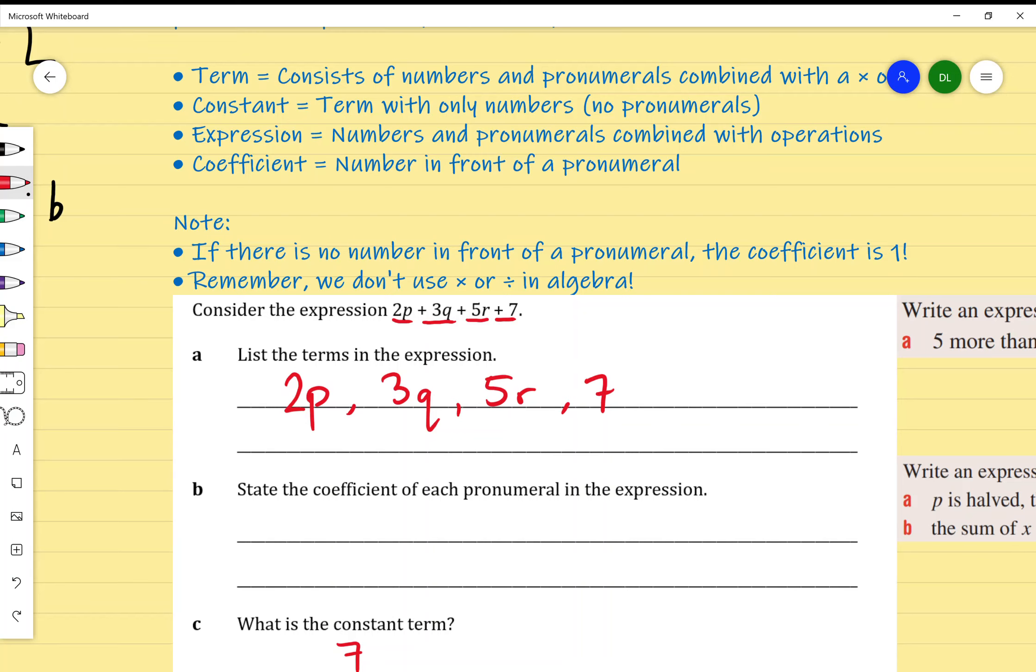The next point is an expression. An expression is numbers or pronumerals that are combined with operations. This whole thing here is an expression. You might be asking what's the difference between an equation and an expression. Just keep in mind that an equation sounds like equal, so equations have to have an equal sign. This one doesn't, so it's just an expression.